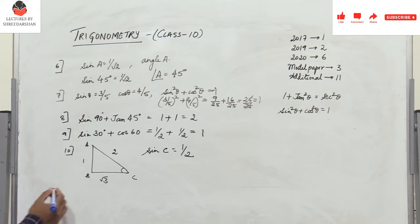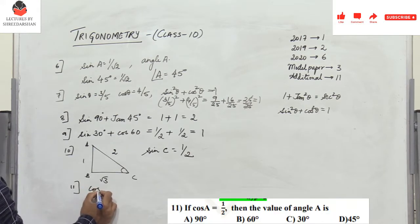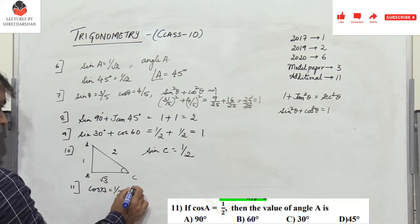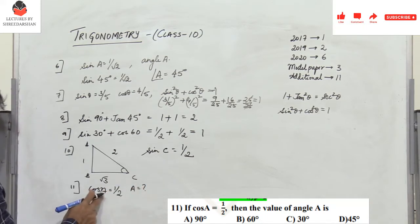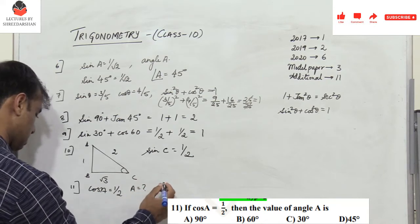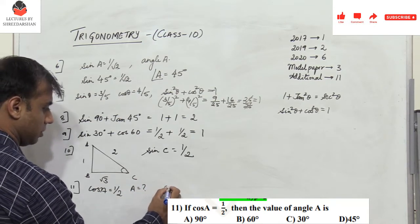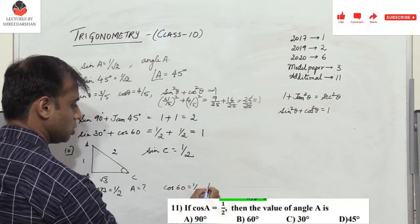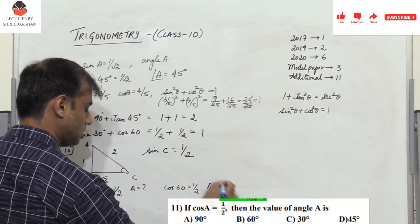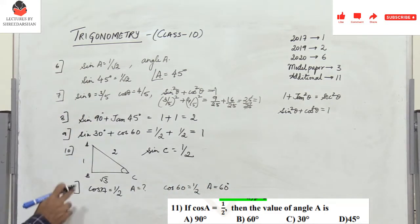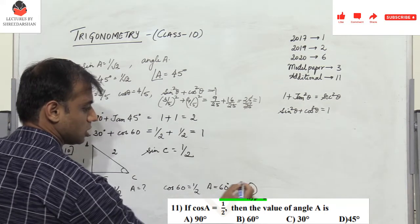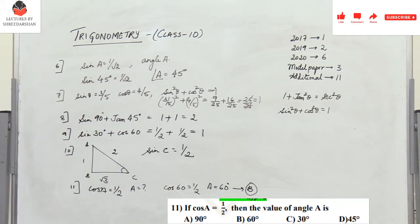Problem 11: if cos a = 1/2, what is a? We know cos60° = 1/2, so a = 60°. It's a multiple choice question and the answer is option B, which corresponds to 60°.